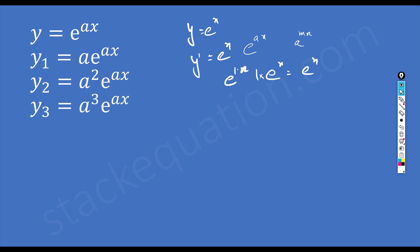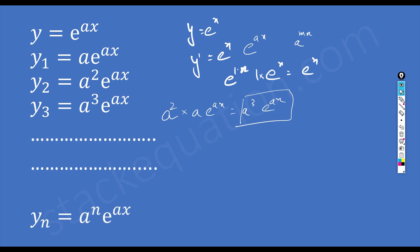For the third derivative, I get a cubed into e to the power ax, because from the second derivative a squared is a constant so I leave it, then I differentiate e to the power ax which gives a into e to the power ax. We can generalize this: the nth derivative is a to the power n into e to the power ax.